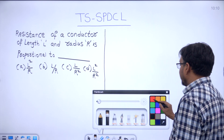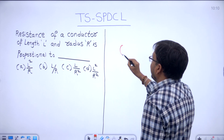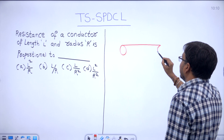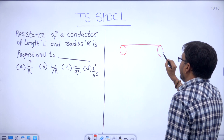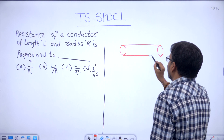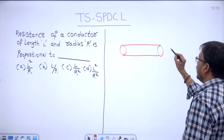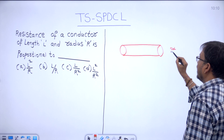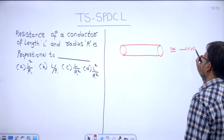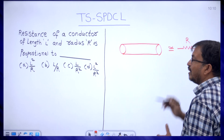Here I am considering a conductor. This conductor has some resistance R. What do we know the resistance formula for this conductor? R is the resistance of the conductor.